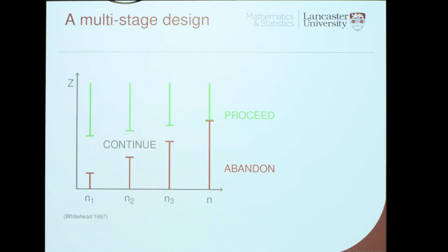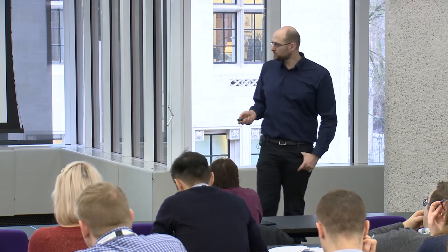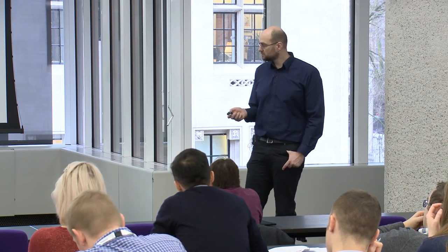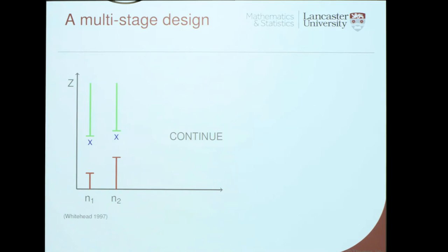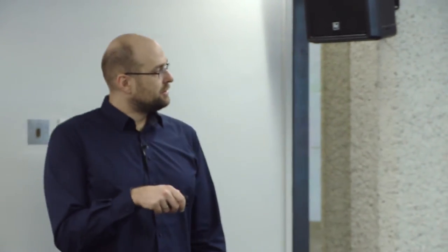This is how such a multi-stage group sequential design could look. If my test statistic is in the red area, I'll stop and give up. If it's in the green area, I'll celebrate — I've found something that works. In between, I need more data. In this example: the first two analyses find the test statistic in the continuation region, meaning we need more observations. But at the third analysis, we cross the upper boundary, and so rather than using a total of n patients, we only needed to recruit n3 patients.